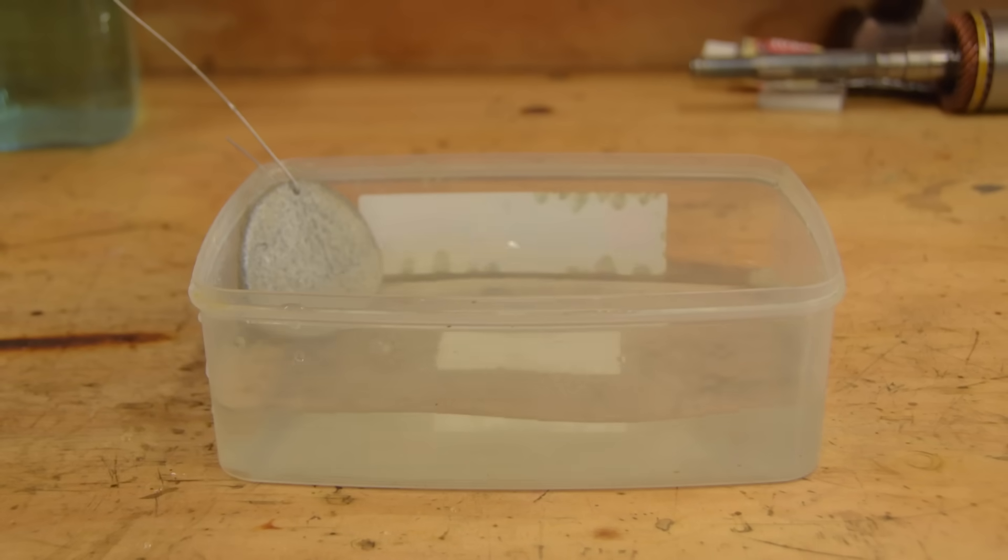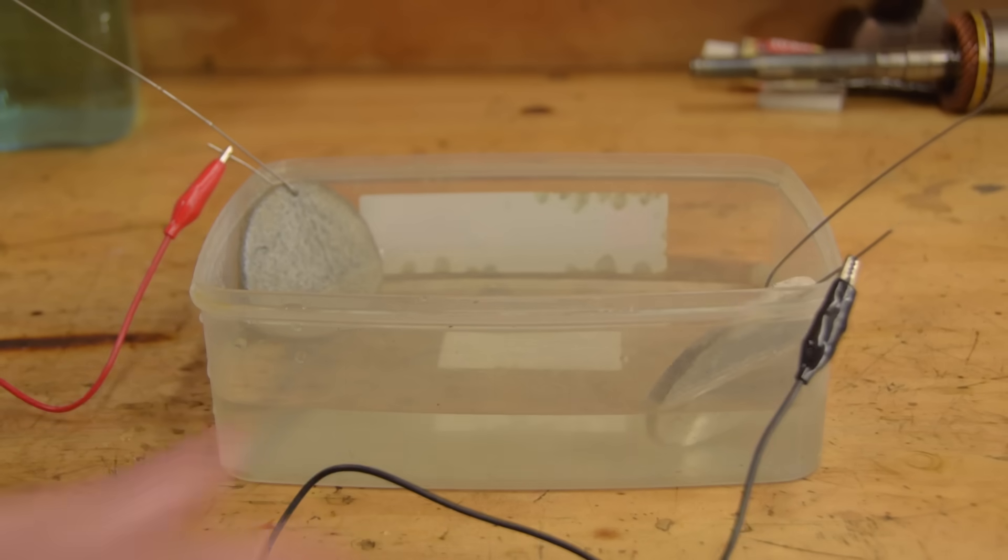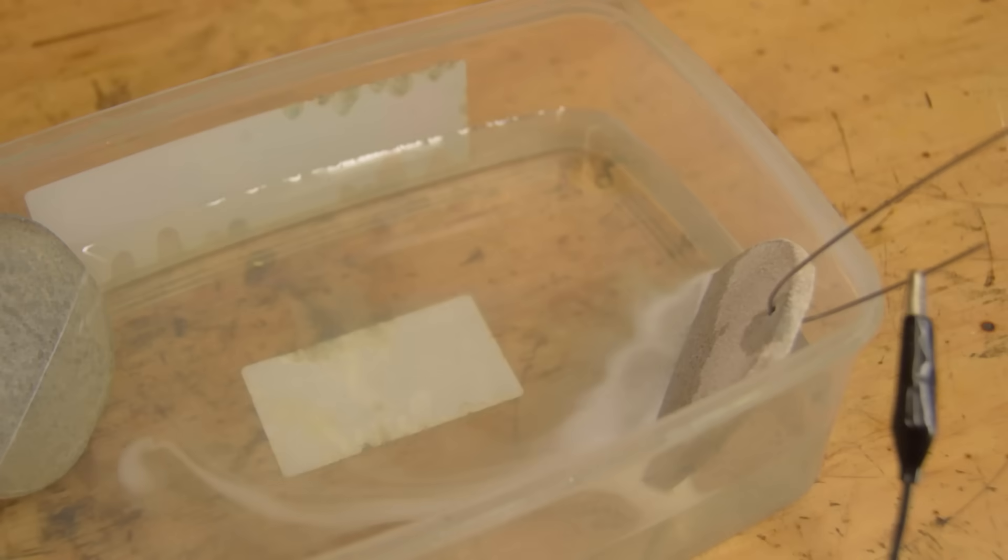Excuse the giant zinc anodes. I already had these. And excuse the lunchbox. I ran out of jars. Zinc doesn't make the solution change color. Just leave the power on for a couple of hours and assume it's working.